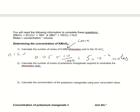Now, calculate the number of moles of potassium manganate required to neutralise this. I need to look at the ratio, which is 2 to 5. So for every 5 moles of ethane dioic acid, it neutralises only 2 moles of the manganate ions. What I need to do is take 5 × 10⁻⁴, divide by 5, then multiply by 2, which gives me 2 × 10⁻⁴ moles.